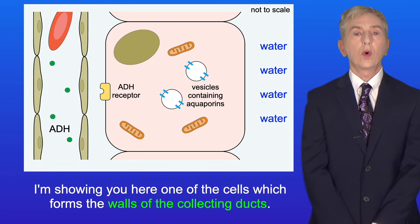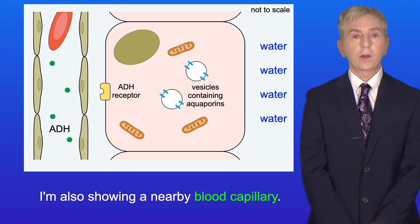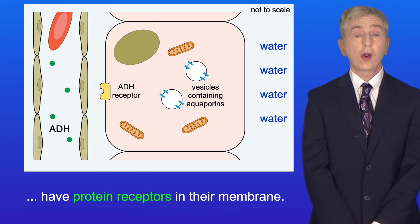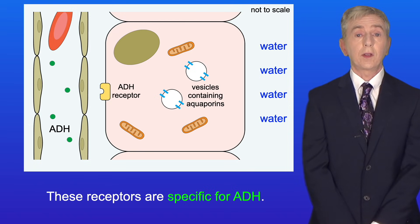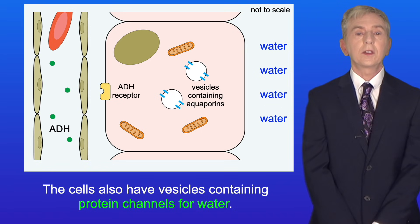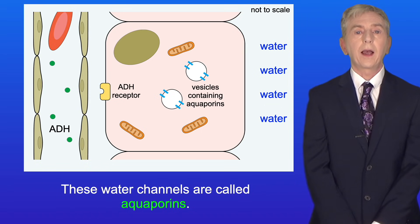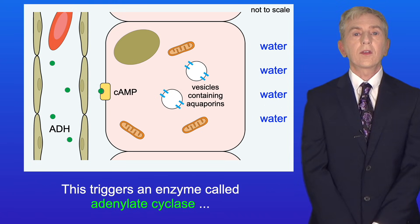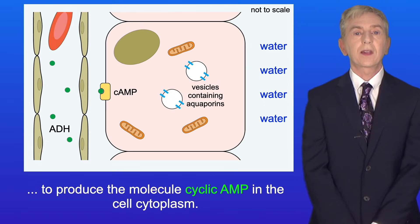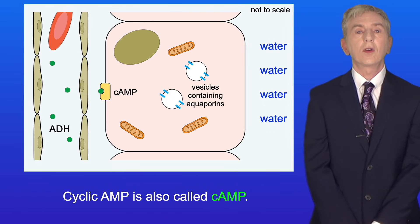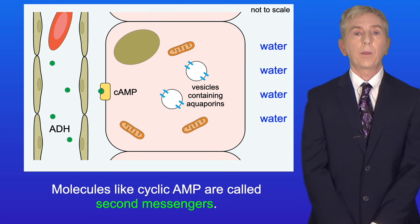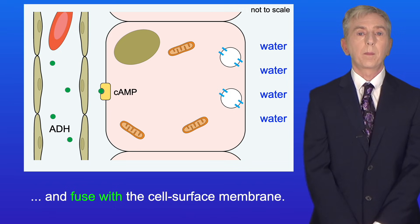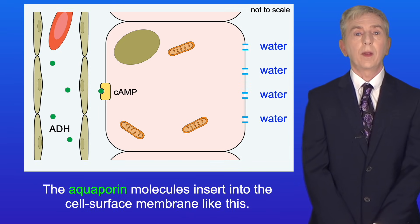Here is one of the cells which forms the walls of the collecting ducts, along with a nearby blood capillary. ADH is shown in the blood as green dots. The cells forming the walls of the collecting duct have protein receptors in their membrane that are specific for ADH. The cells also have vesicles containing protein channels for water — these water channels are called aquaporins. The ADH molecules attach to the cell surface receptors, triggering an enzyme called adenylate cyclase to produce the molecule cyclic AMP (cAMP) in the cell cytoplasm. Molecules like cyclic AMP are called second messengers. Cyclic AMP then triggers the vesicles to move to and fuse with the cell surface membrane, and the aquaporin molecules insert into the cell surface membrane.